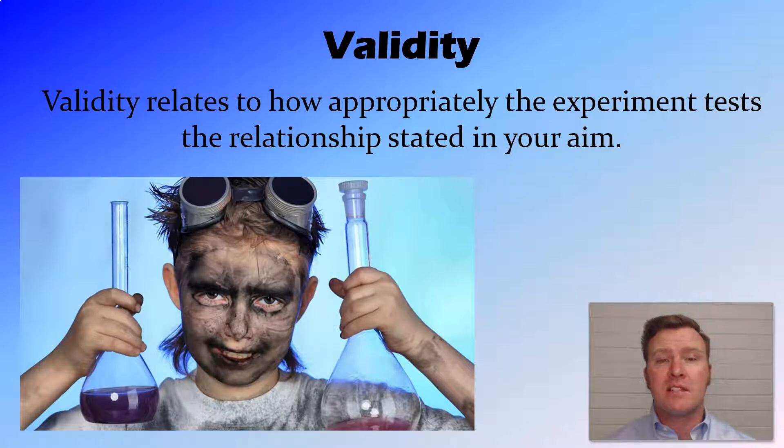So first to define validity. Validity is something that is inherent to the design of your experiment. A valid experiment is one that tests the relationship that is set out in your aim. So your aim should identify the relationship that you're looking at testing. Your experiment and the way you design your experiment should then test that aim.